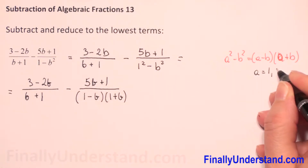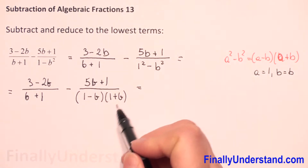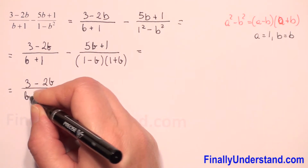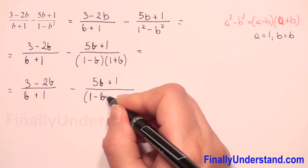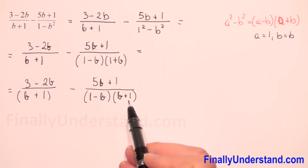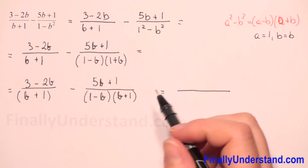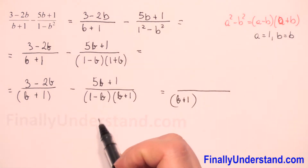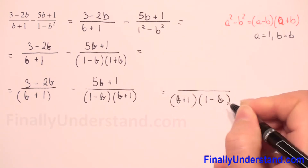In our example, a equals 1 and b equals b. We see that we have b plus 1 and 1 plus b — these are the same. So we rewrite: 3 minus 2b over b plus 1, minus 5b plus 1 over 1 minus b times b plus 1. The LCD must include b plus 1, and since the second denominator has 1 minus b, we must multiply the first fraction's denominator by 1 minus b.